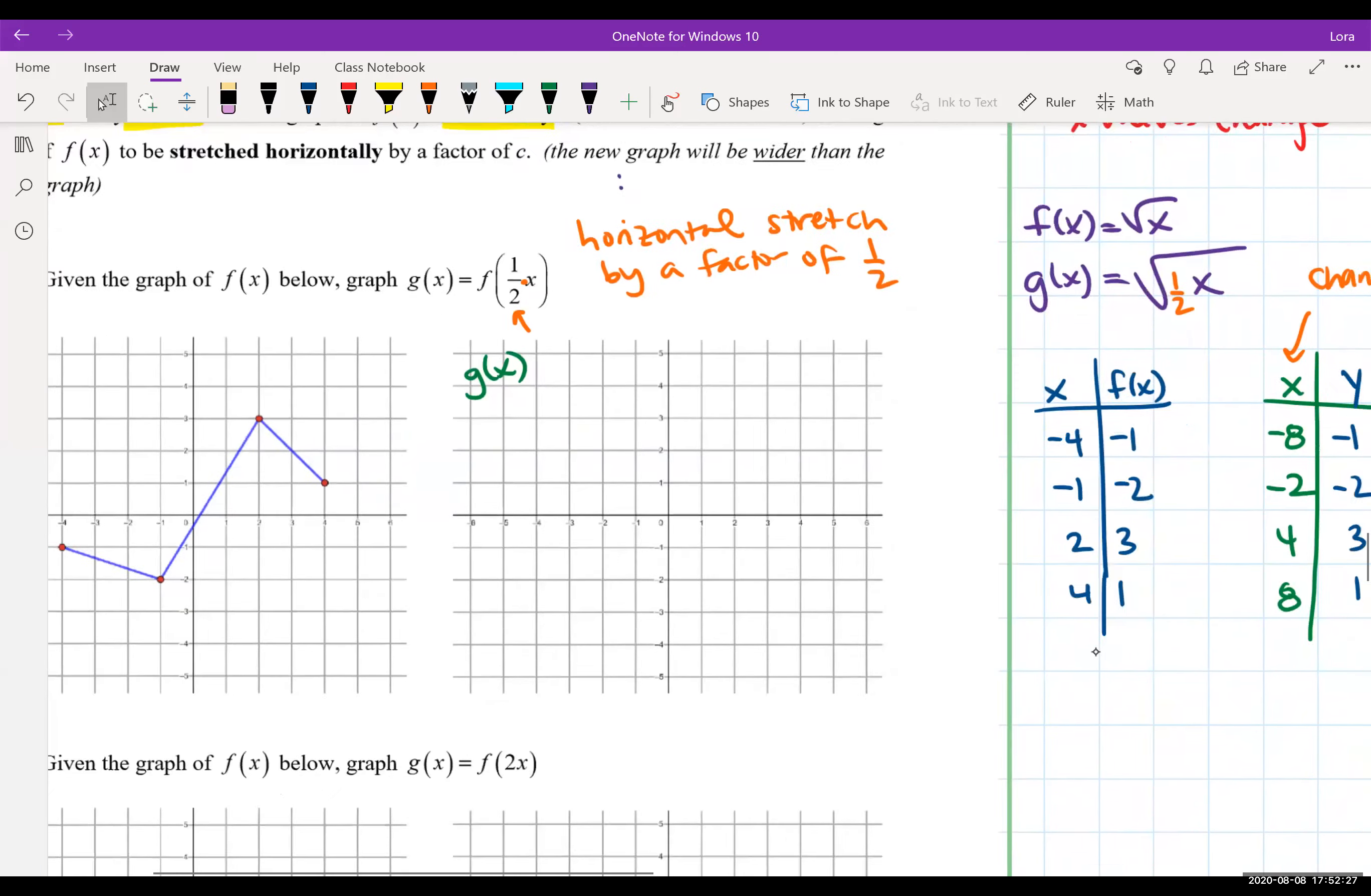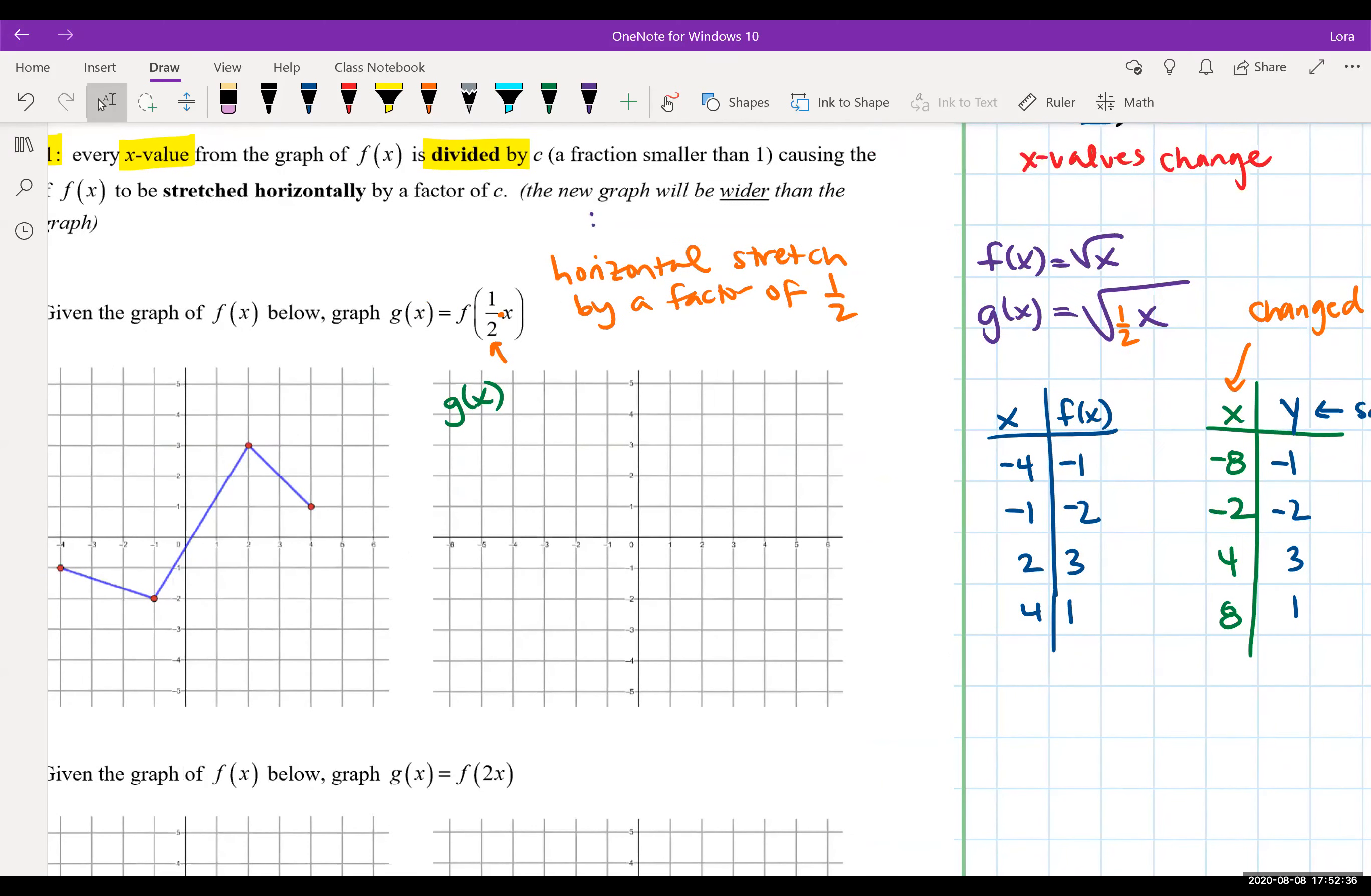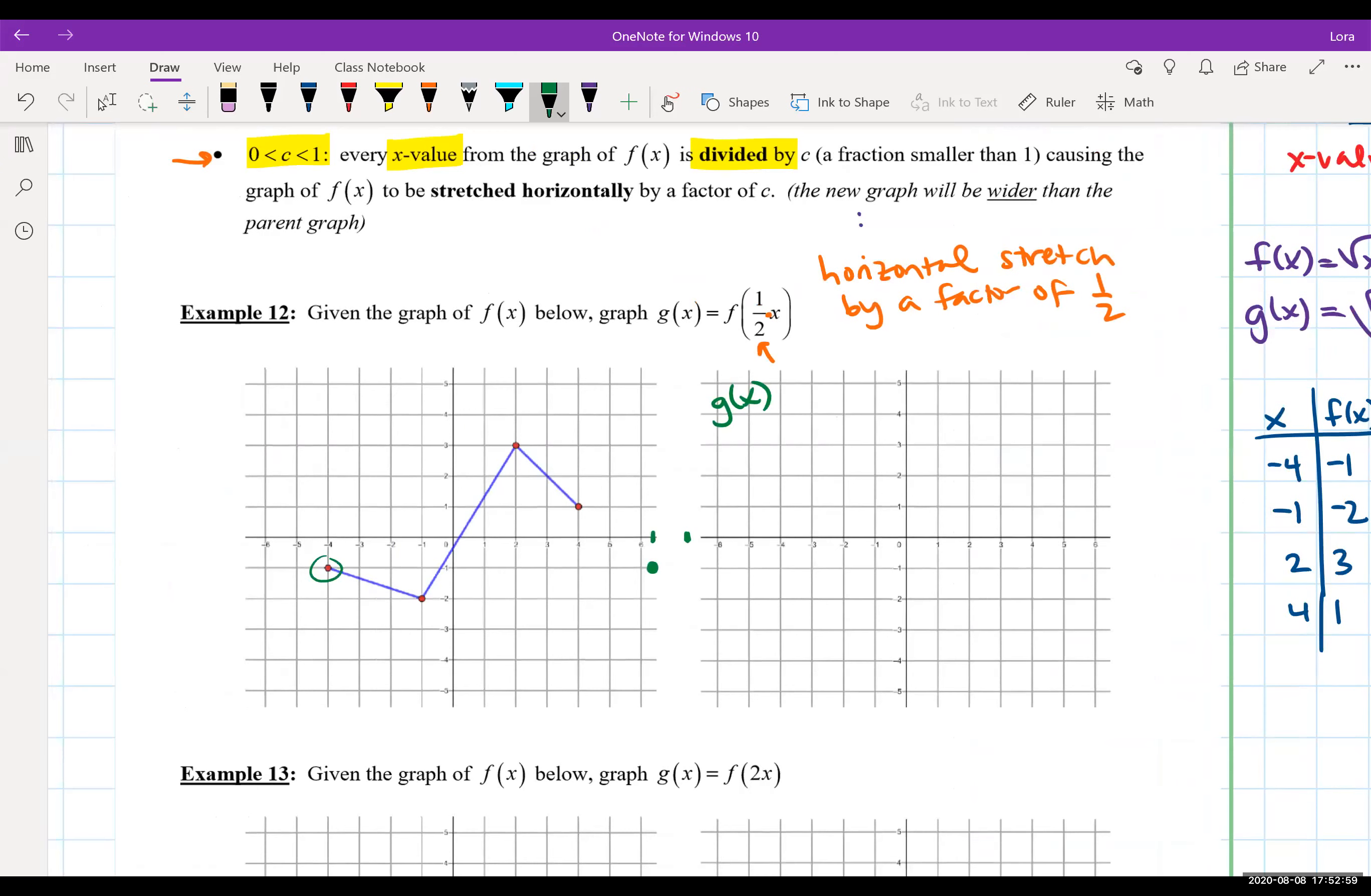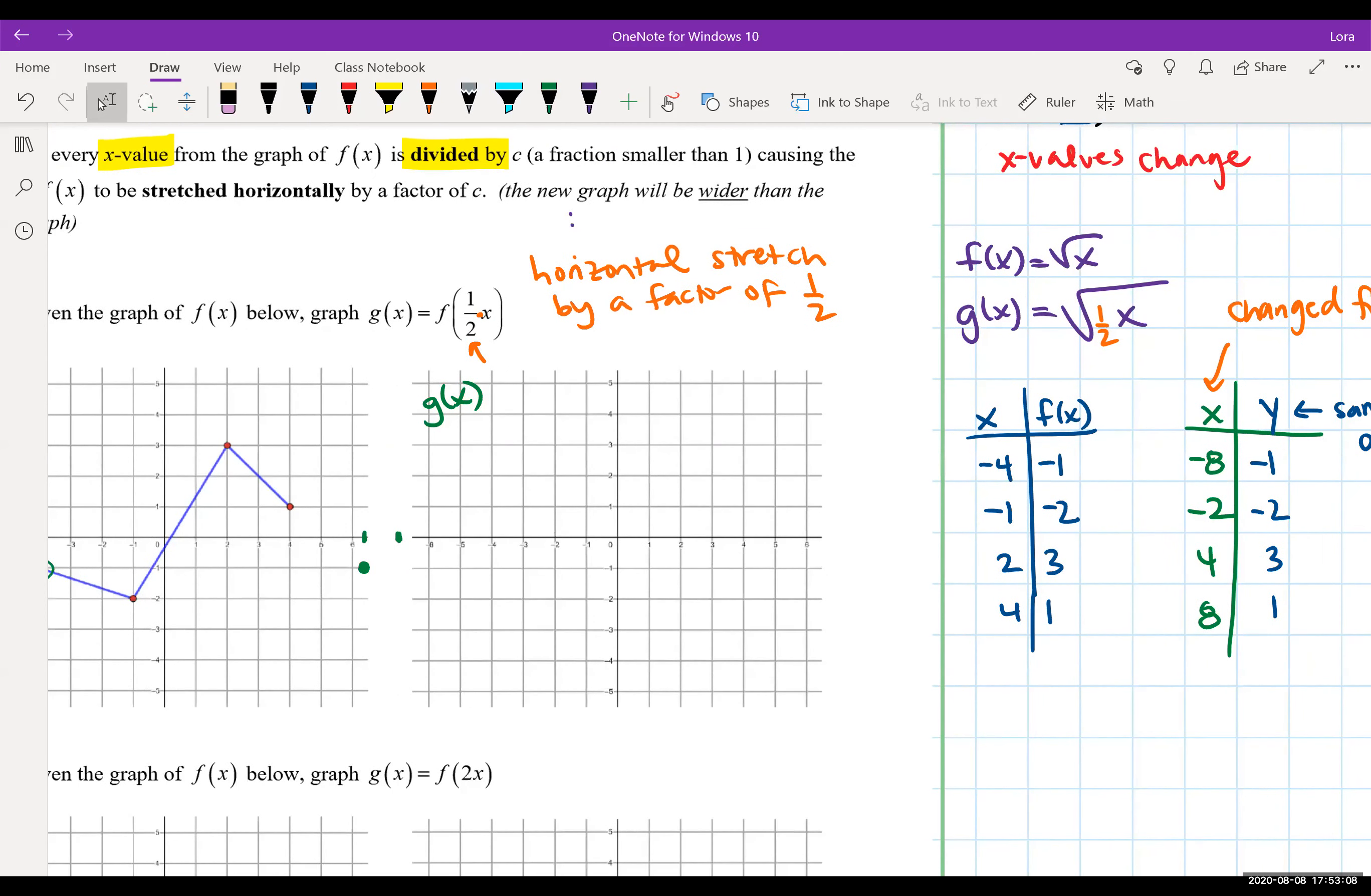Now, all I have to do is plot my points. So I will be plotting negative 8, negative 1. And notice my nice little coordinate system didn't give me enough room. So I'm just going to have to draw my own. Right now, I have negative 6. So I believe negative 7 would be here. Negative 8 would be about here. So if we're doing negative 8, negative 1, we have our first point over here. Now, the next one's negative 2, negative 2. Right here. Then we have 4, 3. And then the last one is 8, 1. So again, we're a little bit off of our coordinate system. But we'll do our best. 8, 1 is about right here.